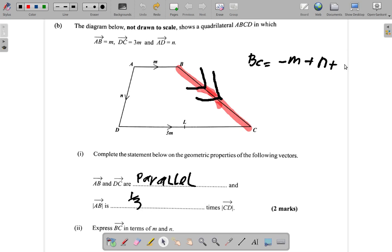So you maintain the 3M here. When you put everything together, BC is negative M plus 3M, which is 2M plus N.